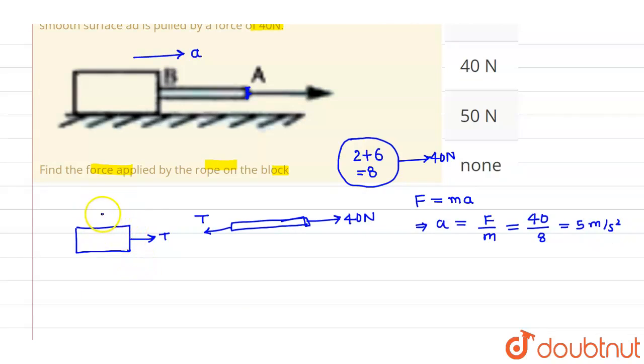Since the acceleration of this block is a and mass is 6 kg, T equals mass times acceleration. With acceleration of 5, T equals 30 newtons.